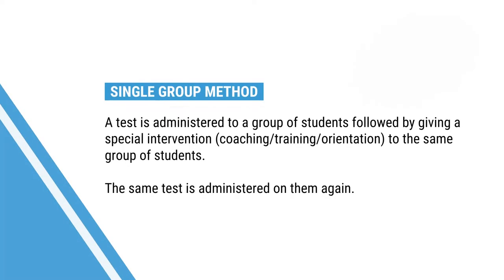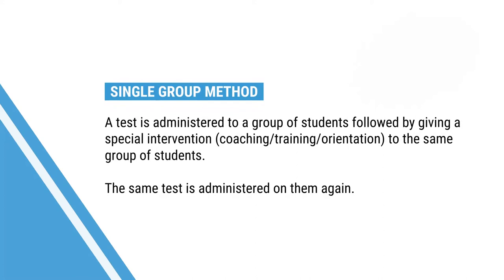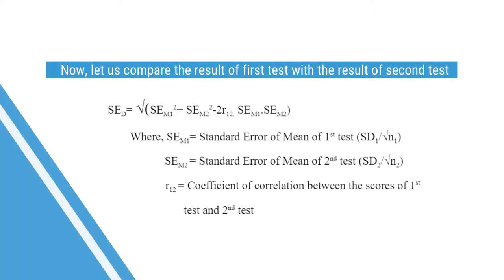Let us first discuss them one by one. Single Group Method: A test is administered to a group of students, followed by giving a special intervention — maybe coaching, training, or orientation — to the same group of students. The same test is administered again at the end of the intervention. Now let us compare the result of the first test with the result of the second test.